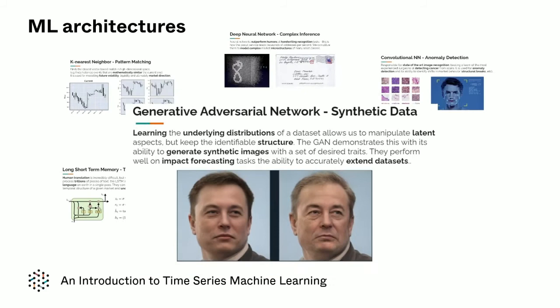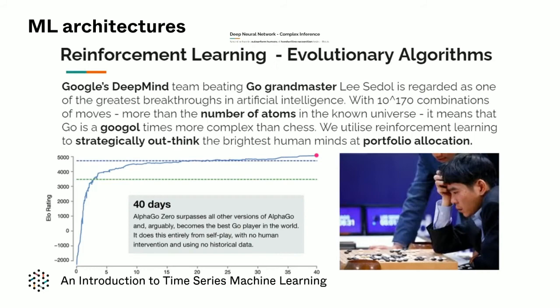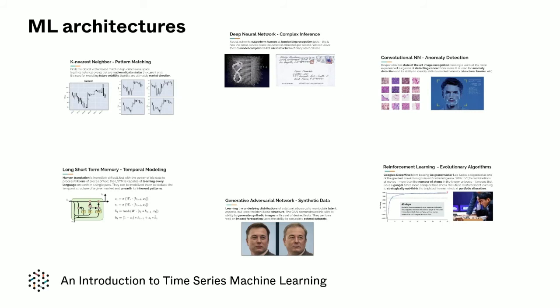Generative adversarial networks help identify any underlying distributions and are used to extend data sets. Finally, reinforcement learning is used to tackle optimization problems throughout the entire stack.